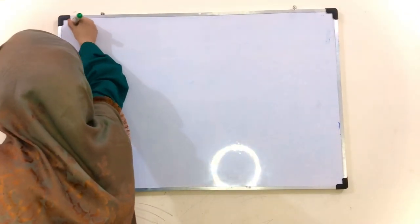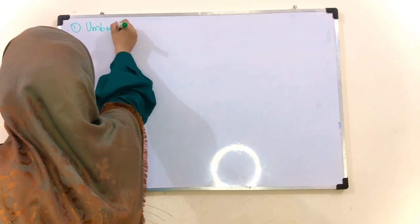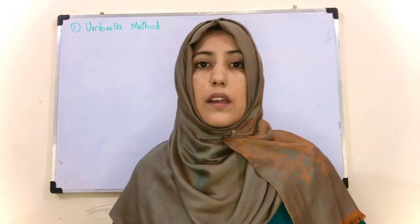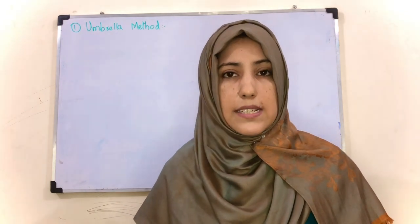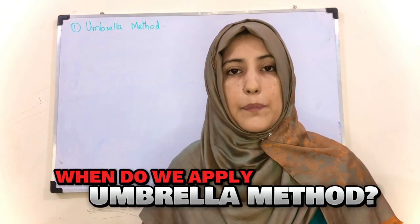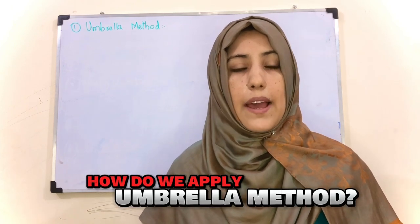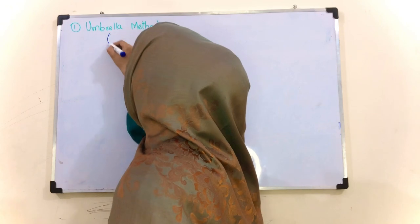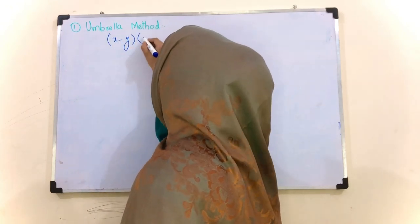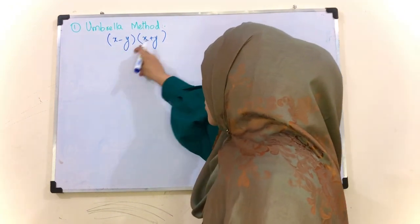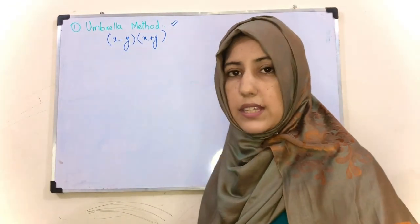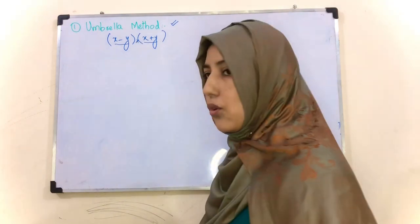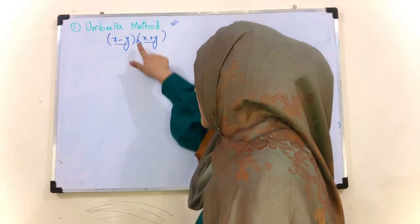First method is the Umbrella Method. Here we have two questions: when do we apply it, and how do we apply it? Umbrella method ko tab apply kiya jata hai jab bhi hamare paas koi si bhi do algebraic expressions hoon aur woh product ki form mein hoon - to hum Umbrella method ka use karte hain. Jab multiply form mein hoon to hum Umbrella method ka use karte hain.